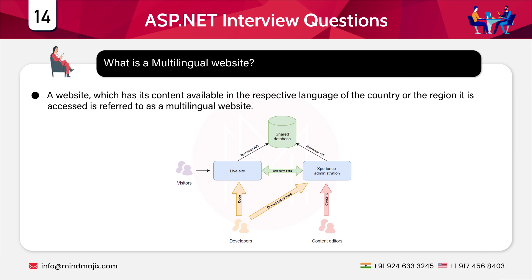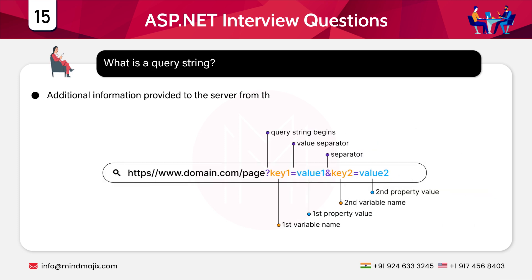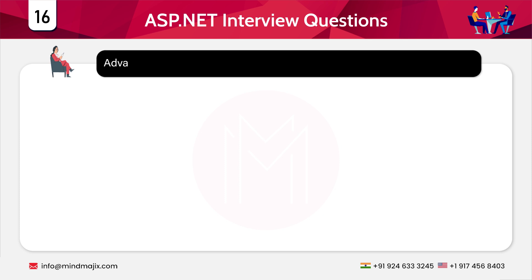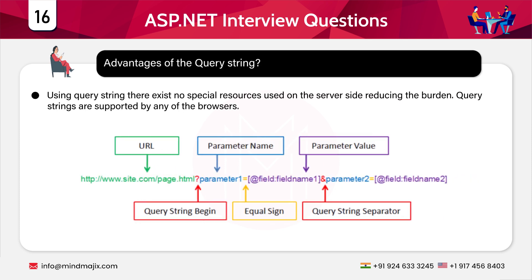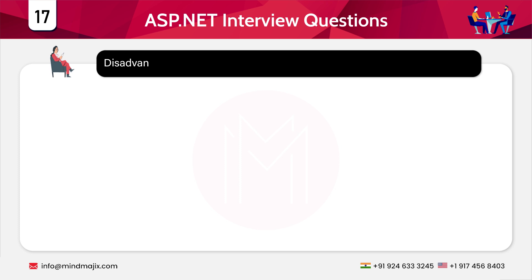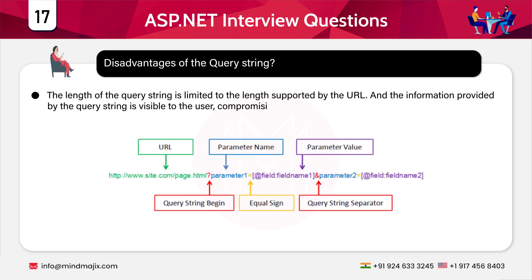The next question is: what is a multilingual website? A website that has its content available in the respective language of the country or region it is accessed in is known as a multilingual website. A query string is additional information provided to the server from the web page through the URL. The advantages of query strings include no special server-side resources being used, reducing the burden, and support by any web browser. However, the disadvantages are that query string length is limited by the URL length, and the information is visible to the user, compromising security.